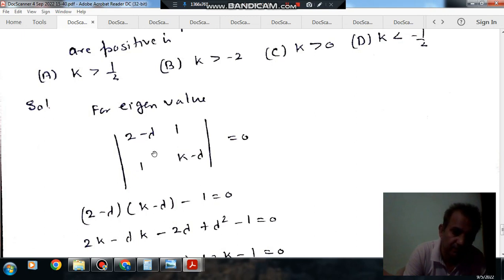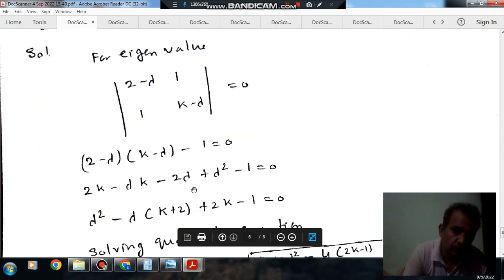So its determinant is (2 - lambda)(K - lambda) - 1 should be equal to 0.